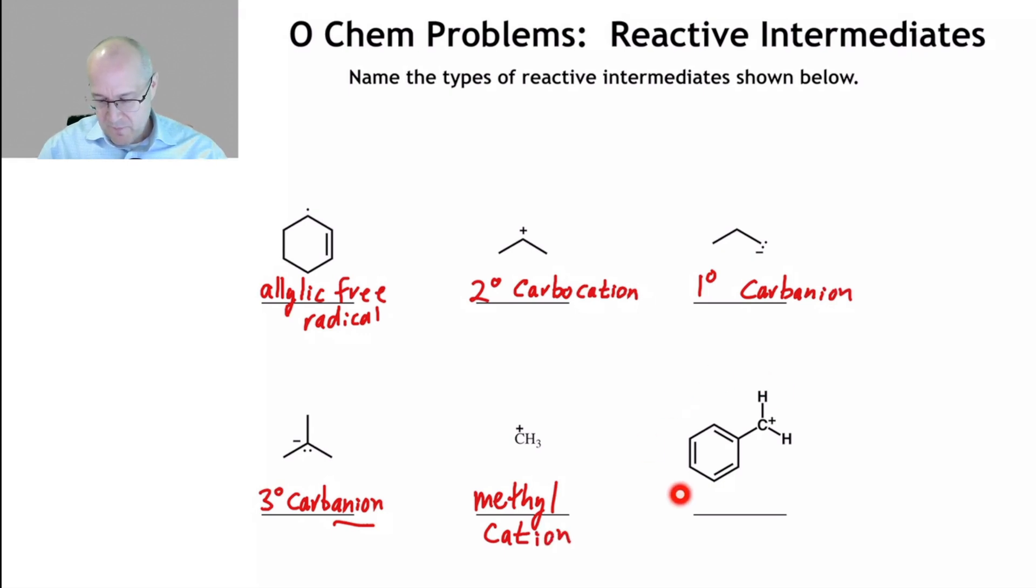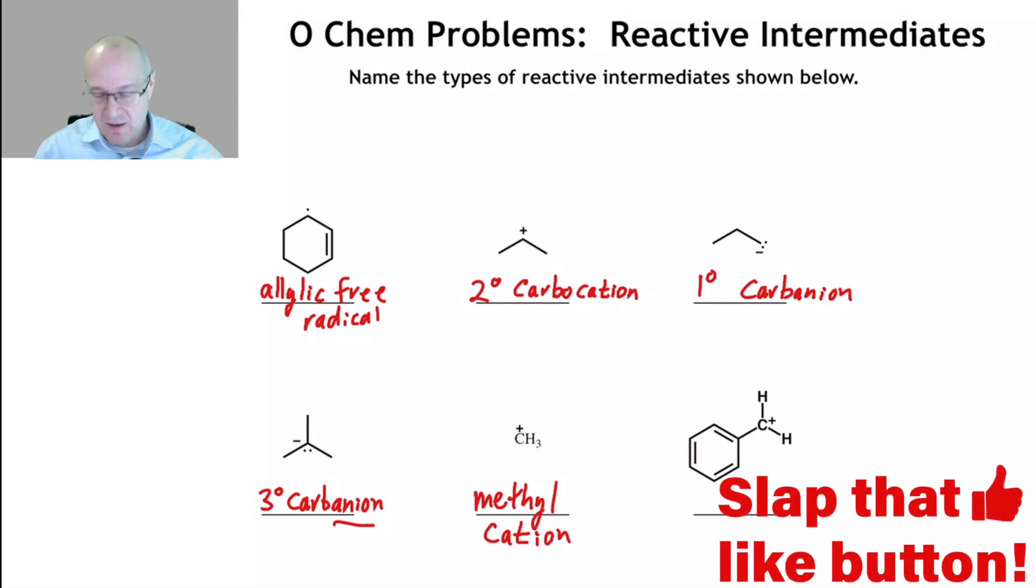And finally, we have what appears to be a primary cation. However, it's attached directly to a benzene ring. This is a benzylic carbocation.